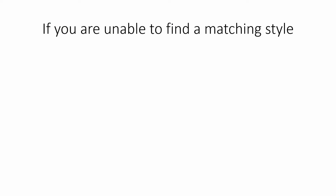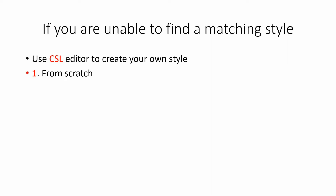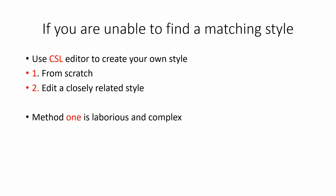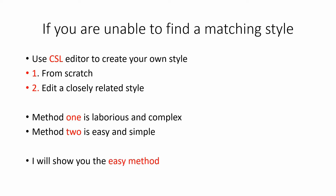Now, if you are unable to find a matching style, then use the CSL editor to create your own style — either from scratch or by editing a closely related style. Method one (from scratch) is laborious and complex. Method two (editing a closely related style) is easy and simple. I will show you the easy method. First you will have to find a closely matching style, just as I told you a few moments ago.